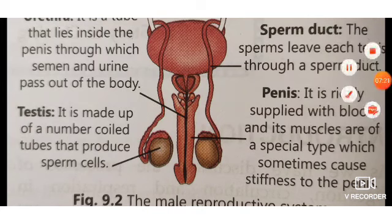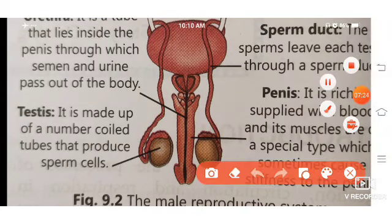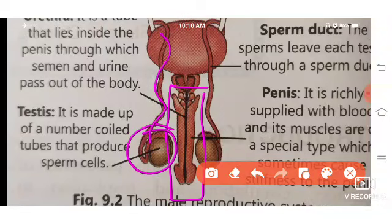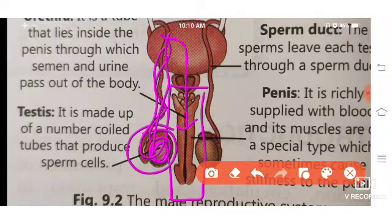The penis functions in ejaculation — it ejects sperm into the female vaginal area during intercourse. So the sperm formed in the testes travel through the sperm duct and then pass through the penis, resulting in ejaculation into the vaginal area. To summarize the male reproductive system: the three important parts are — first, testes; second, sperm duct; and third, penis.